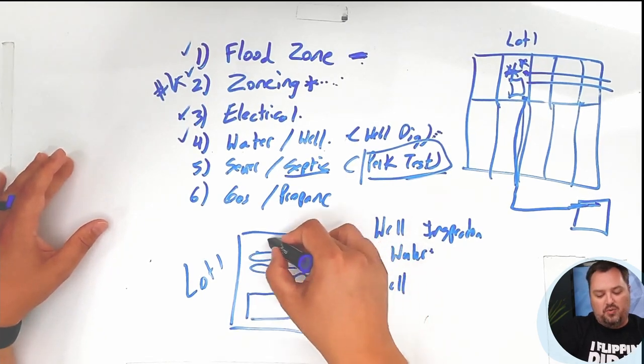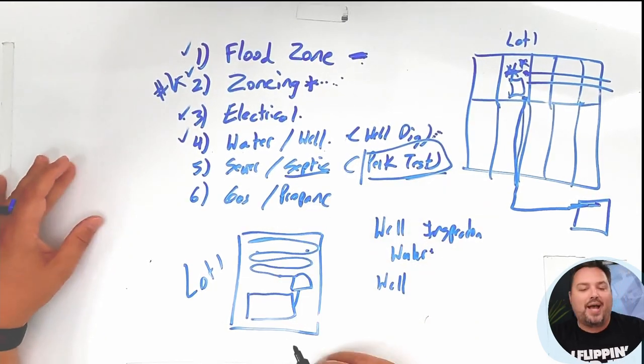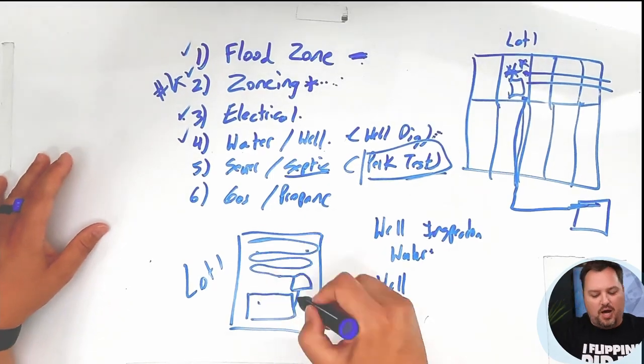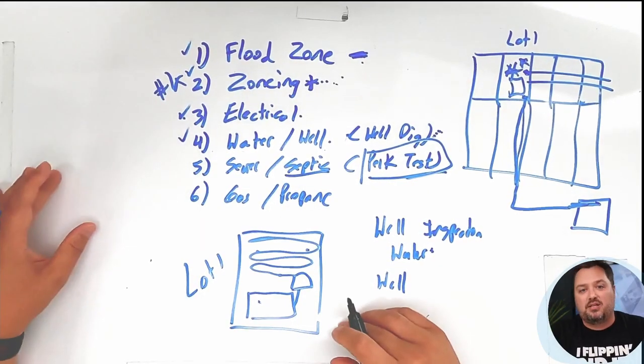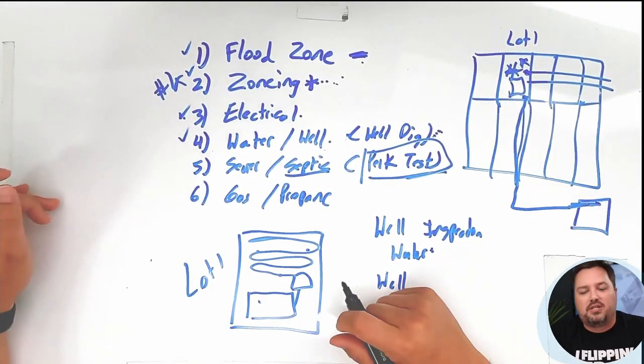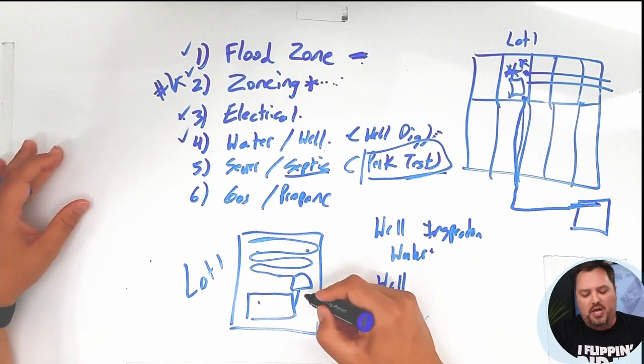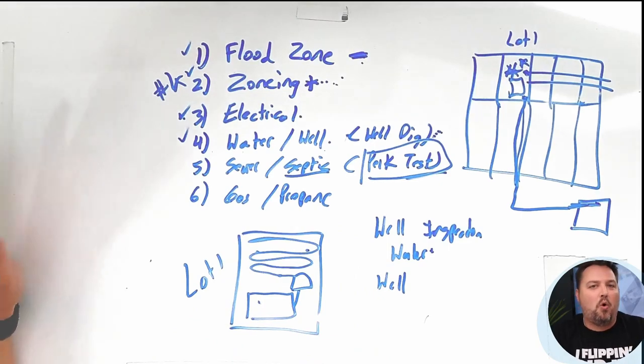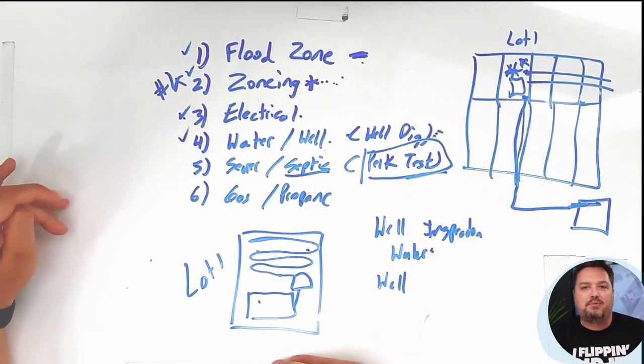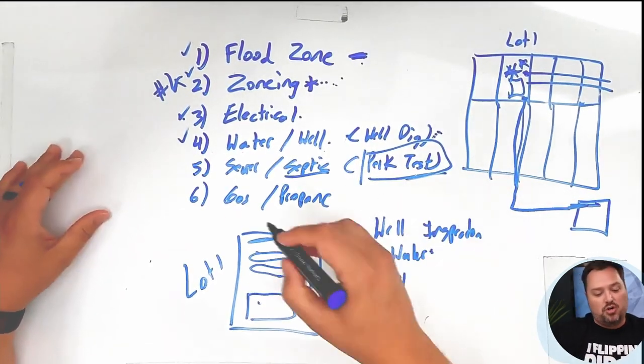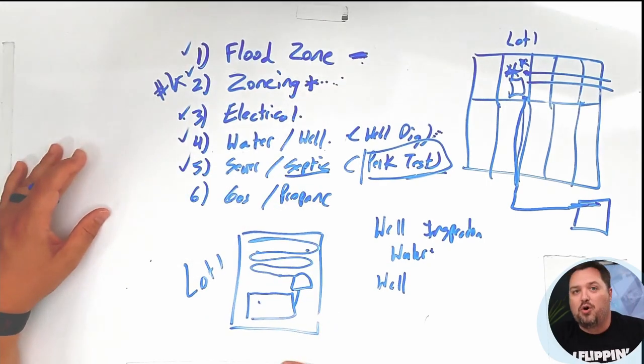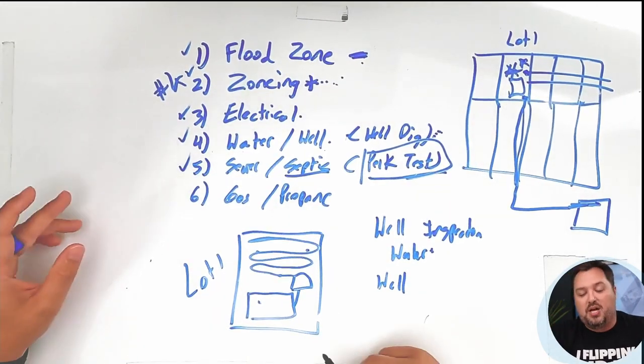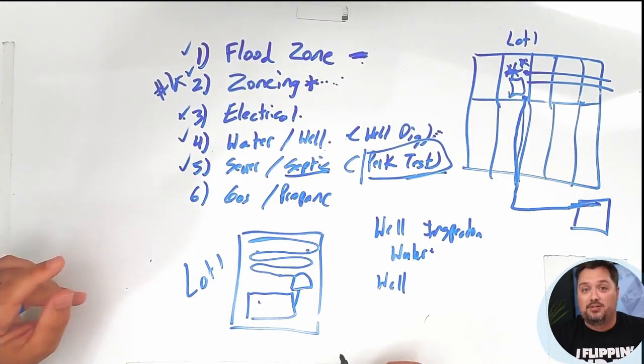And then we're going to run this leach field all the way down here so that we can drain out the leach fields. So they may give you a couple of options. And in some cases they'll say, this is the only option. This is the only place you can put your home in order for us to put the septic system, and that may not be exactly where you were hoping the home would go. That's going to happen because you're doing a PERC test. You're going to want to make sure you know where the poo goes. Because if you don't, there's going to be a problem. Trust me.